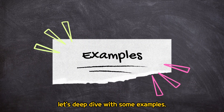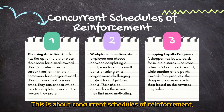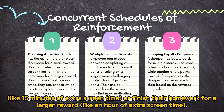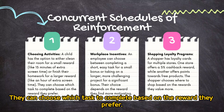Let's deep dive with some examples. This is about concurrent schedules of reinforcement. Choosing activities: a child has the option to either clean their room for a small reward, like 15 minutes of extra screen time, or finish their homework for a larger reward like an hour of extra screen time. They can choose which task to complete based on the reward they prefer.